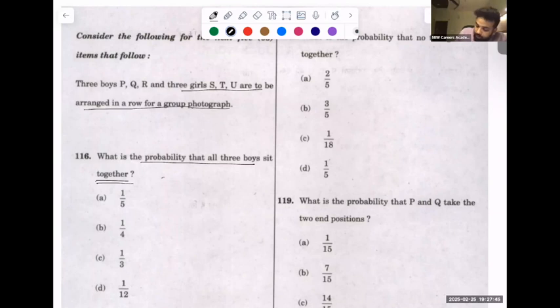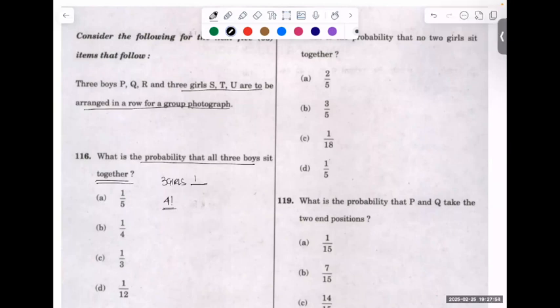Let's assume there are three girls and boys are made as one. So way of filling this is four factorial. Yes or no? Yes sir. We're considering them as one, so this becomes four into three into two into one.